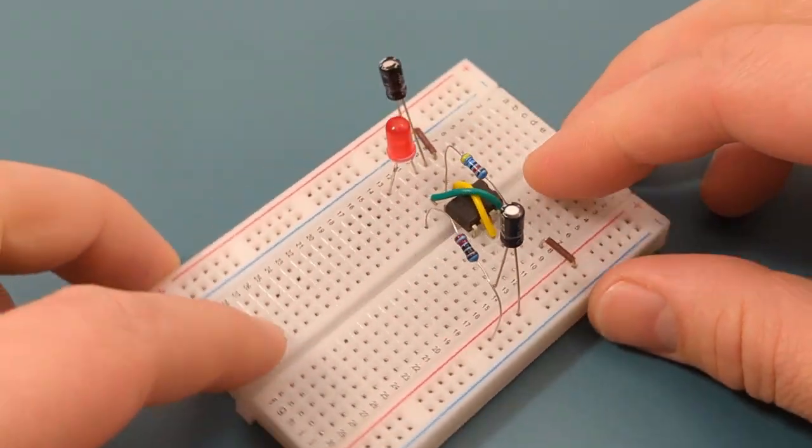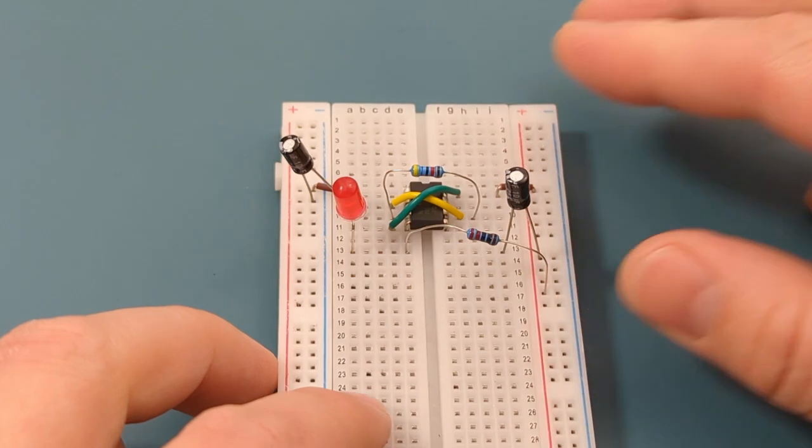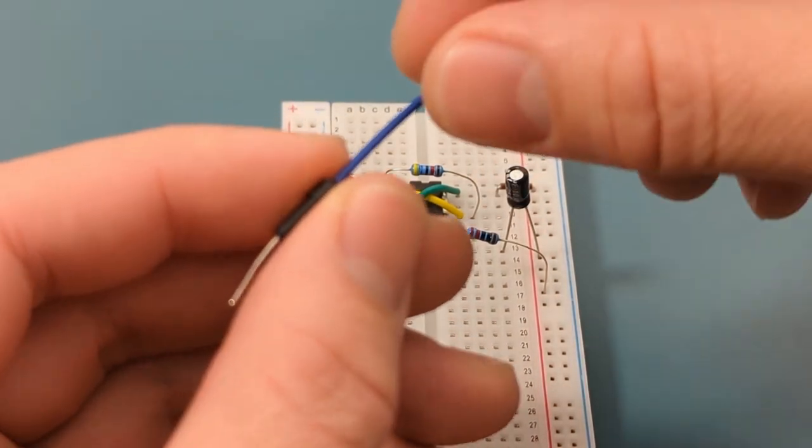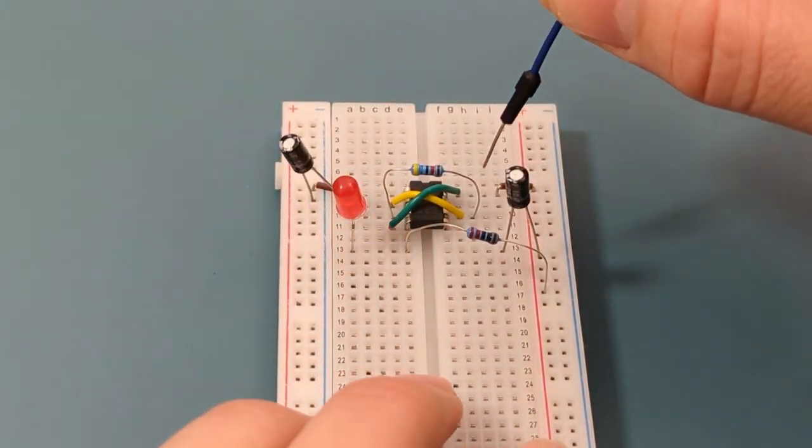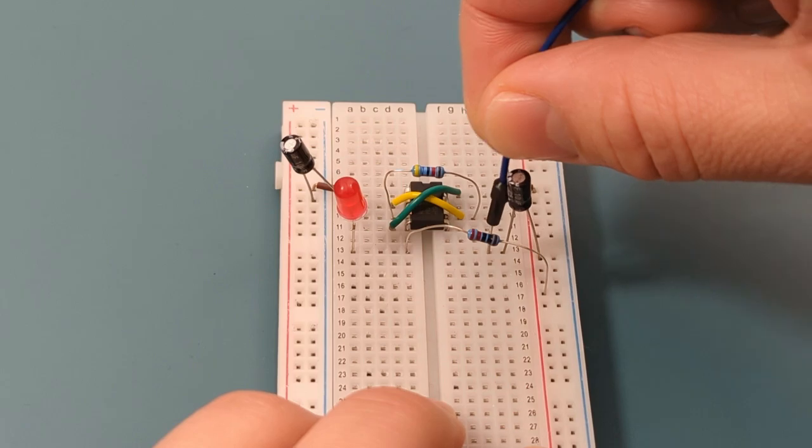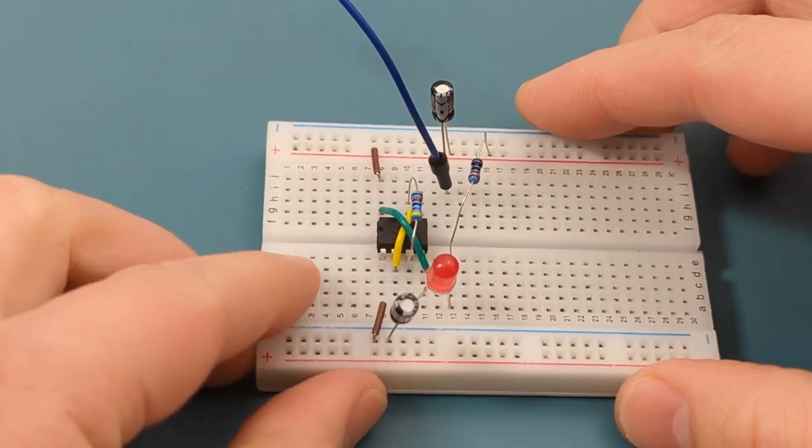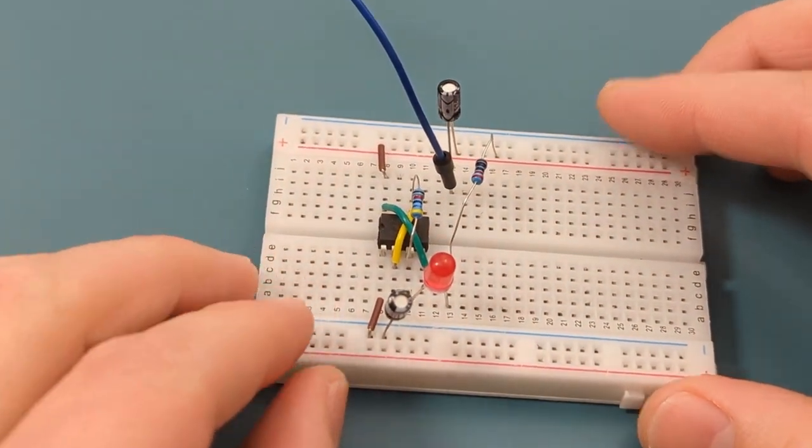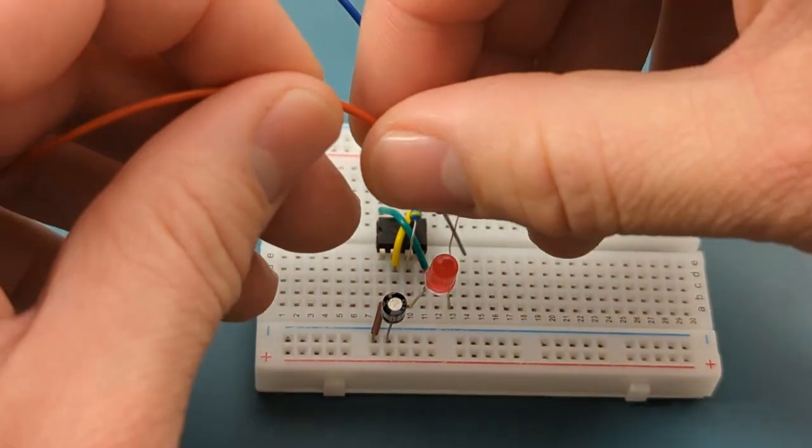Turn the breadboard to the vertical position. Insert a jumper wire into the same row as the 220 ohms resistor. Turn the breadboard to the horizontal position. Insert a jumper wire into pin three or output.